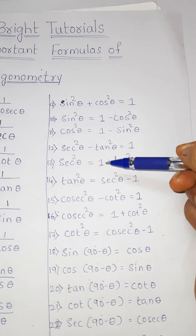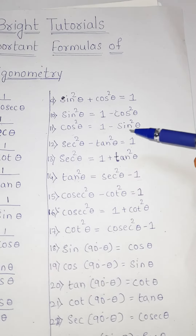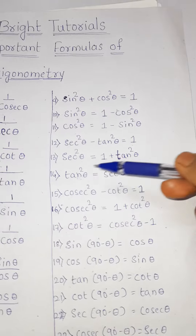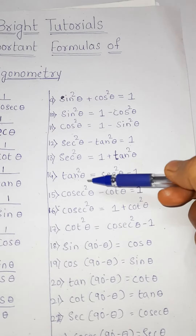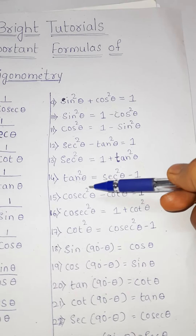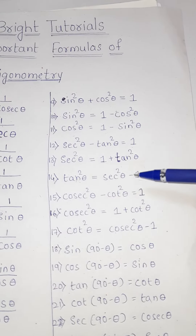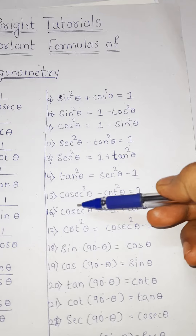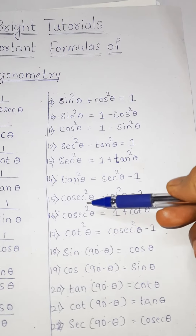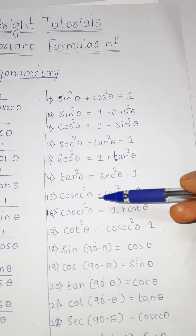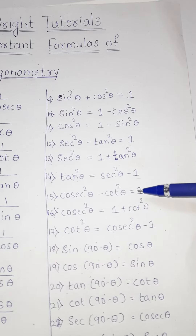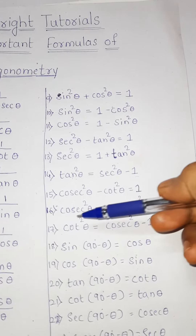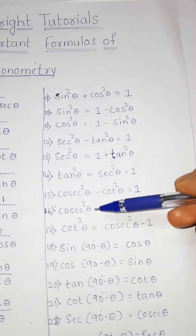Thirteenth one: sec square theta is equal to 1 plus tan square theta. Fourteenth one: tan square theta is equal to sec square theta minus 1. Fifteenth one: cosec square theta minus cot square theta is equal to 1.